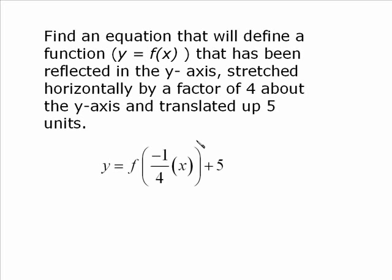So, y equals f of negative one-quarter x plus 5. A reflection in the y-axis means that x gets replaced with negative x. The horizontal stretch factor by 4 means that we have to have the reciprocal of that. So x actually got replaced by negative one-quarter x. The translation of 5 units up meant that we add 5 onto the graph. Or, if you like, you replaced y with y minus 5.